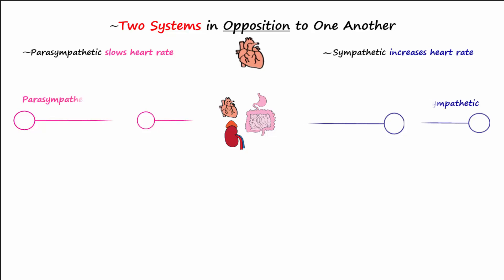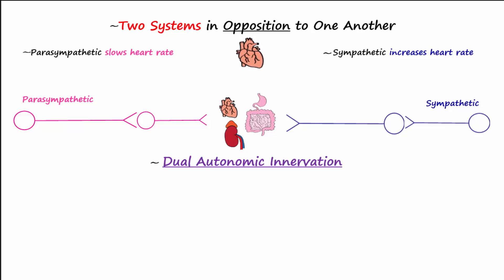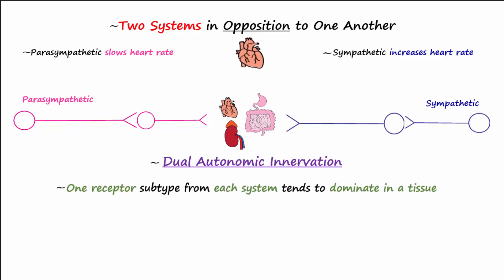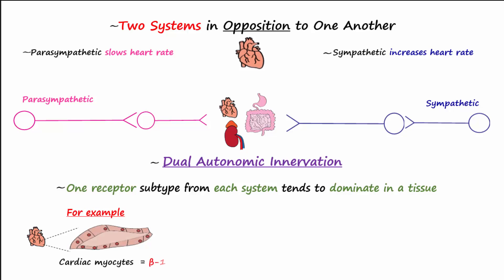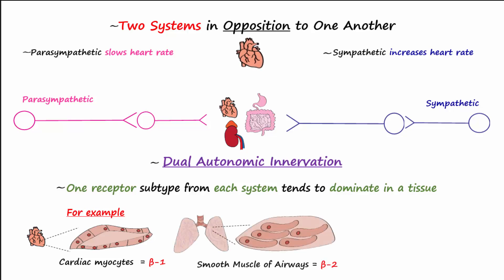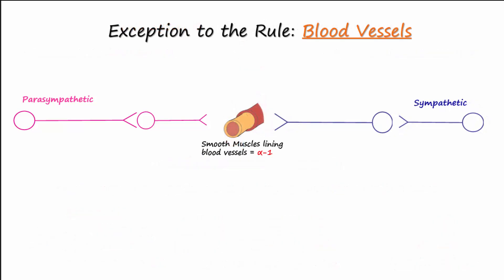Most organs are innervated by both branches of the ANS; this is called dual autonomic innervation. Remember that one receptor subtype from each system will tend to dominate in a tissue. For example, on the sympathetic side, cardiac myocytes have predominantly beta-1 receptors, the smooth muscle of airways has mostly beta-2 receptors, and alpha-1 receptors are the predominant receptors on the smooth muscles lining blood vessels.